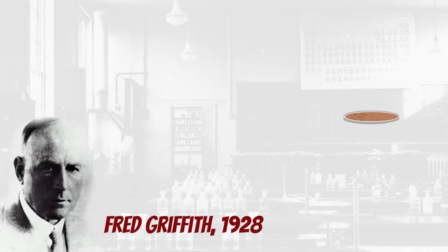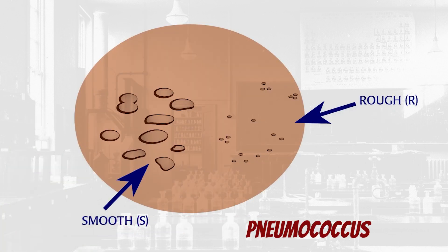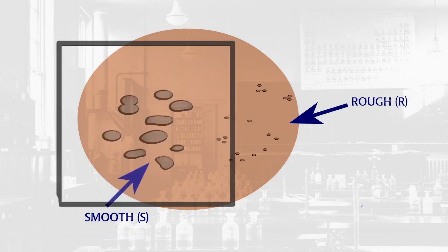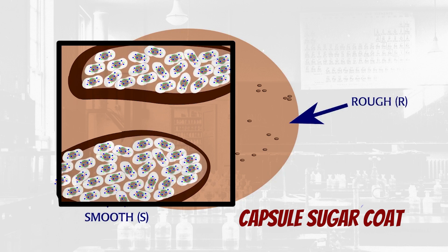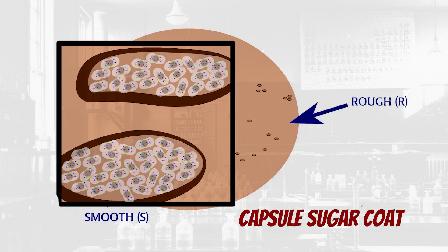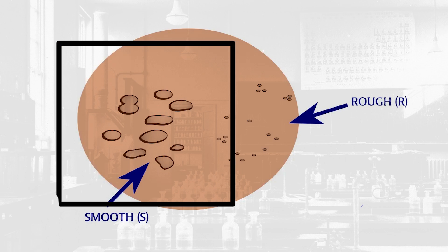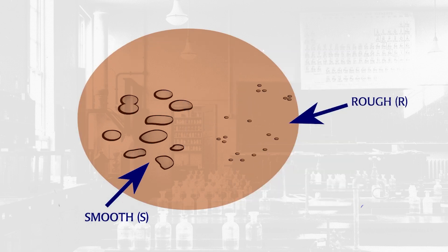In 1928, British bacteriologist Fred Griffith published a study on two strains of pneumococcus: S-strain and R-strain. The S-colonies have a smooth surface, and the R-colonies had a rough surface. The S-colonies look smooth because each bacterium has a capsule-like coat made of sugars. The coat protects the S-bacteria from the host's immune system, and so the S-strain is infectious. The coatless R-strain is not.